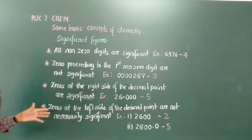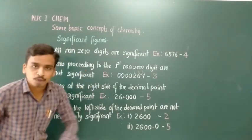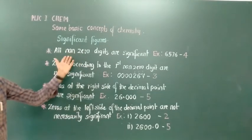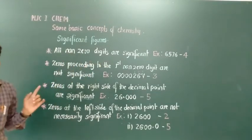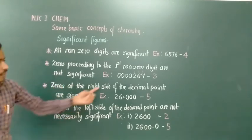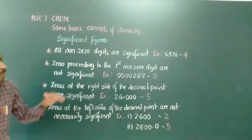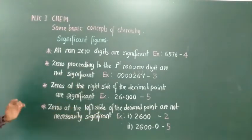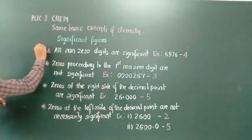These are 4 important rules to remember. Along with these, another rule is also known: zeros present in between two non-zero digits are also significant. For example, in a number like 1001, the zeros in between are significant. However, for exam purposes, the 4 main rules are most important.